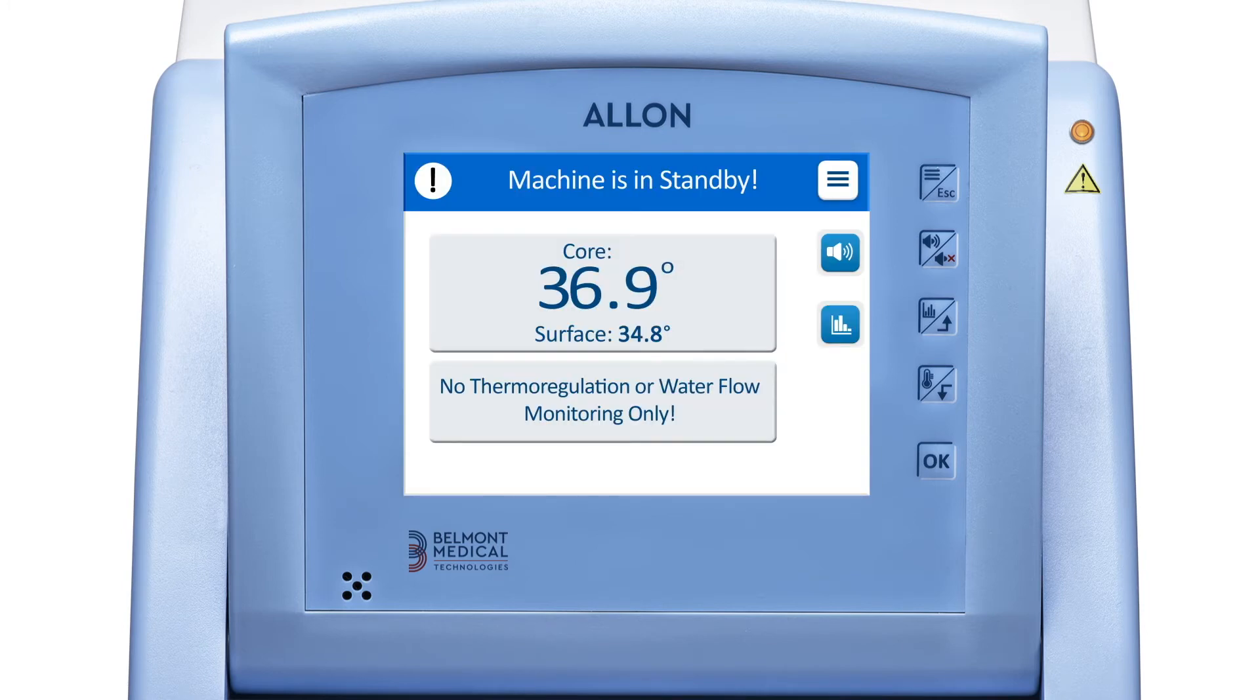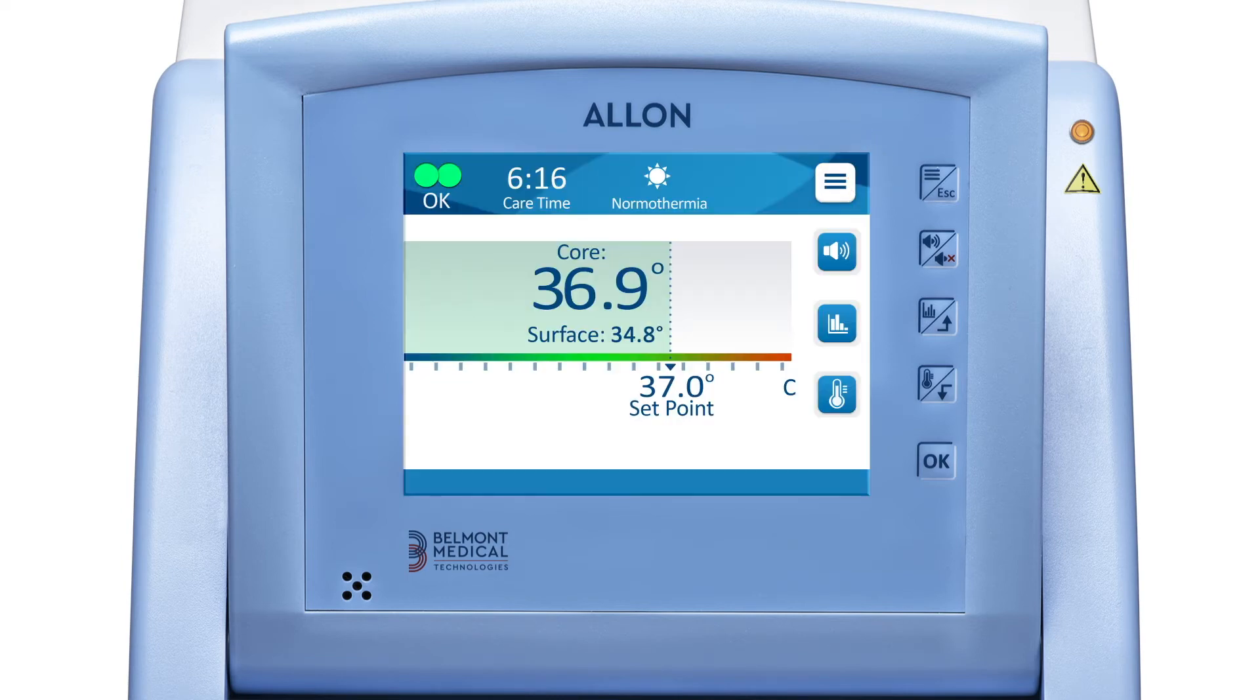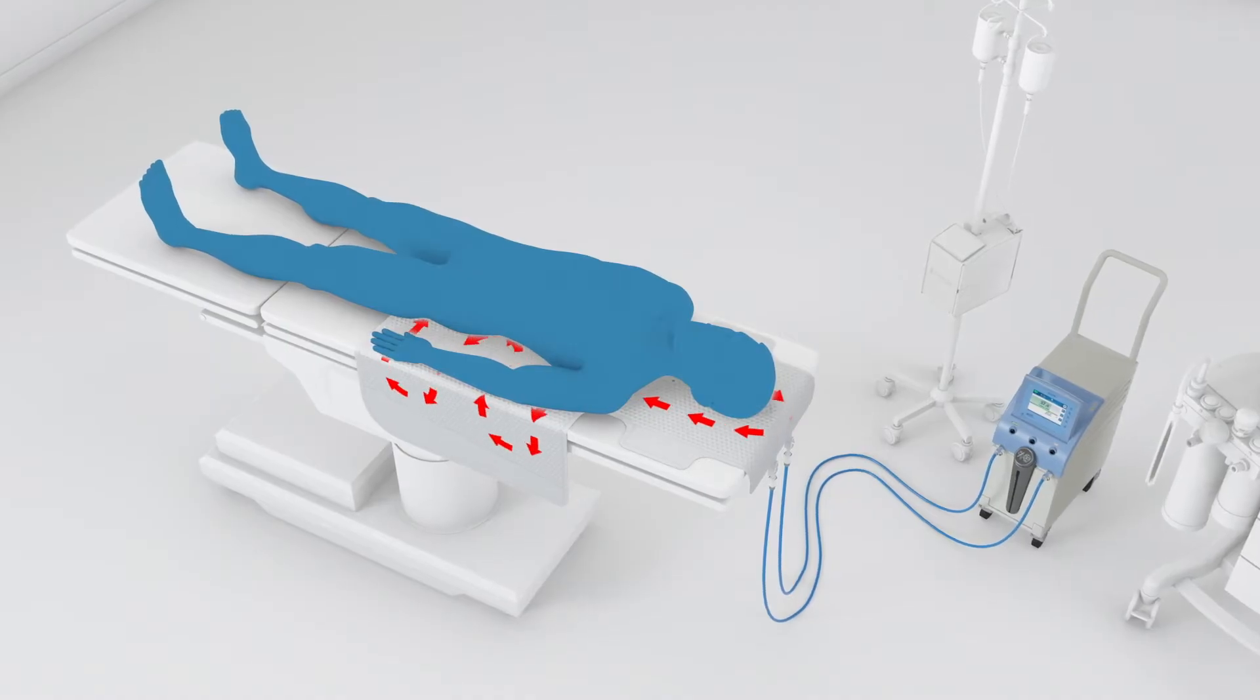To exit standby mode and continue regulating temperature, choose menu, then operate. Water will begin filling the wrap.